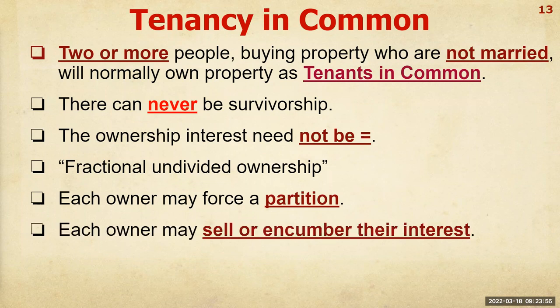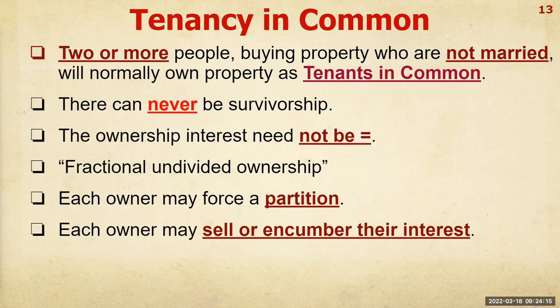Each owner in a tenancy in common may sell or encumber their interest. Each owner can sell their interest to someone else, or borrow money against the property, but only up to their ownership interest. The owner with 20% can only borrow 20% of what the property is worth.